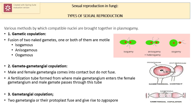The third category is gametangial copulation, occurring in zygomycetes such as Mucor, in which the male and female gametangia come in contact and the entire gametangia fuse with each other, losing their separate identities. From the fusion they produce a spore-like structure known as a zygospore. In the zygospore, male and female nuclei are present, pairing with each other, and eventually some pairs fuse to form diploid nuclei which further undergo meiosis.